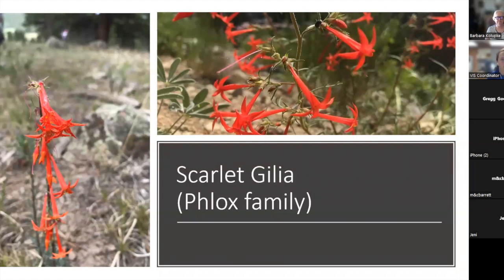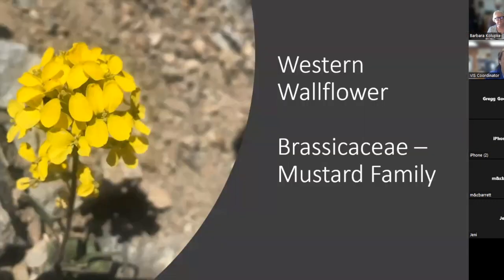Our next one is the scarlet gilia — a bright red, trumpet-shaped flower. It grows in generally drier, more open areas; you'd find it along the side of a trail or road. It's in the phlox family, so it's got five petals with sort of winged petals at the end of the tube. It'll have multiple flowers on a stalk with thinner leaves often lower down. It's one of the fewer bright red flowers, so it's a pretty bright and easy-to-spot sight.